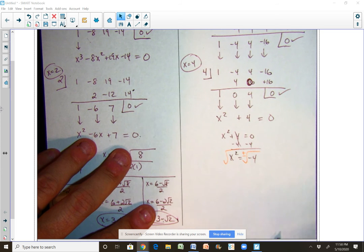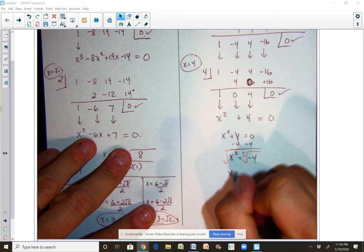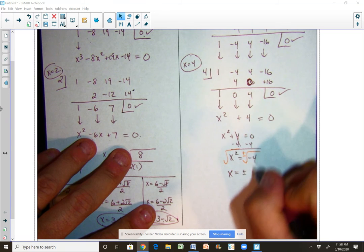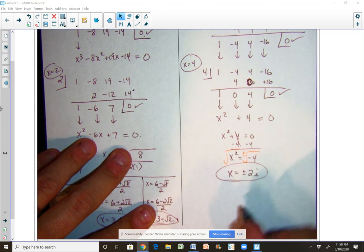And again that's a plus minus right there. So we get x equals plus and minus the square root of negative 4, which is just 2i. So those are our other two roots.